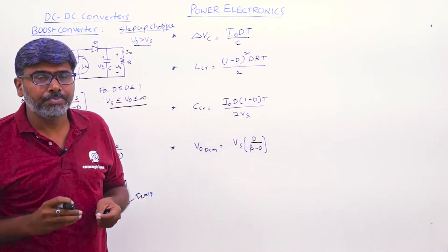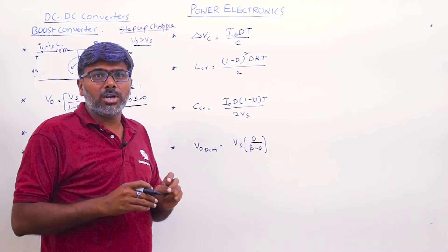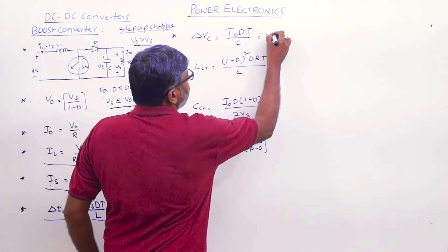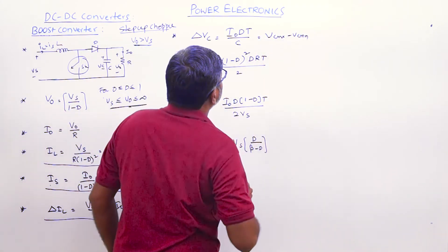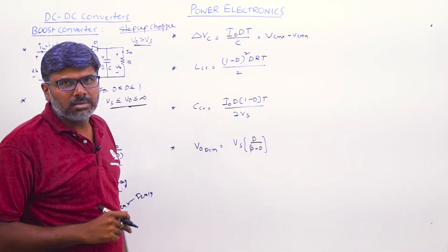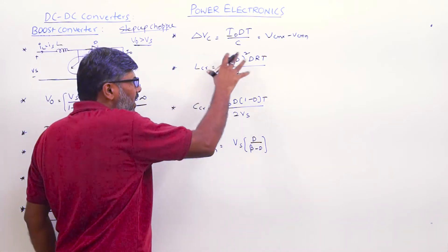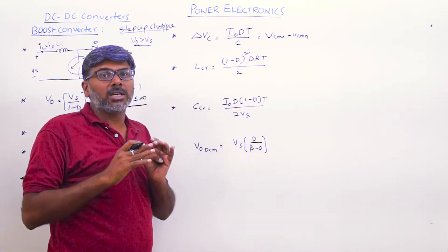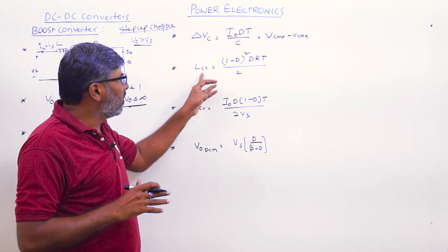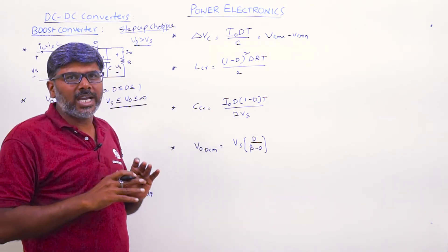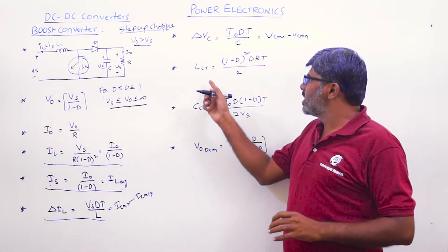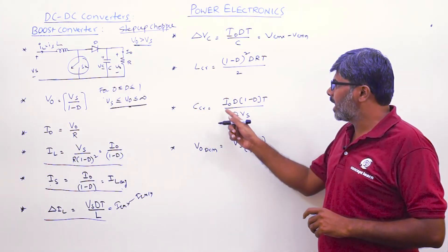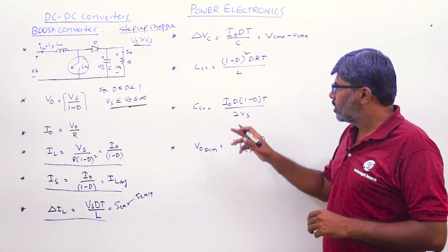The capacitor voltage also varies between a maximum and minimum value, so the ripple in capacitor voltage is ΔVc = I0 × D × T / C. The critical values for continuous conduction in the boost converter are: critical inductance Lcr = (1 − D)² × D × R × T / 2, and critical capacitance Ccr = I0 × D × (1 − D) × T / (2 × Vs).